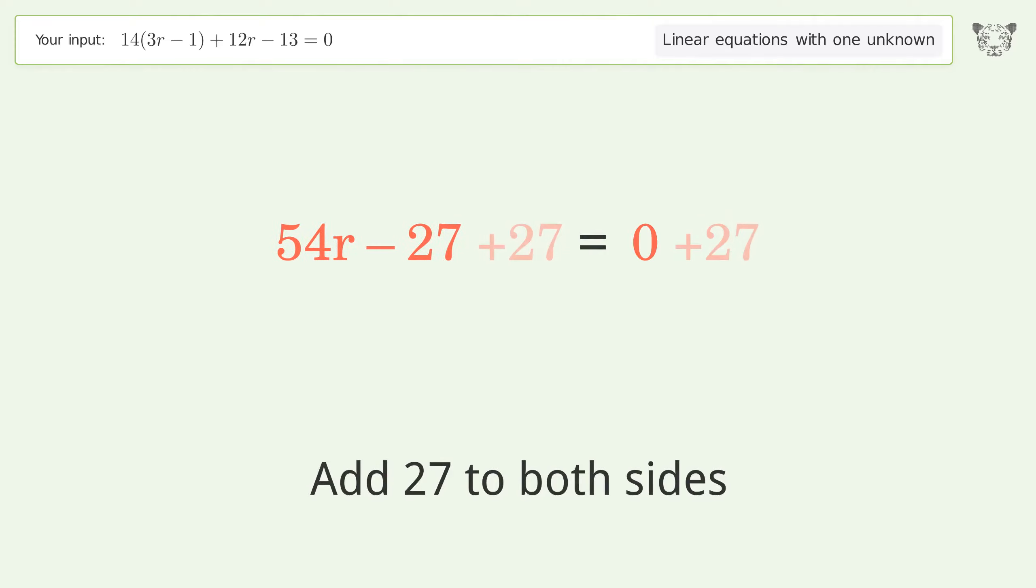Group all constants on the right side of the equation. Add 27 to both sides. Simplify the arithmetic.